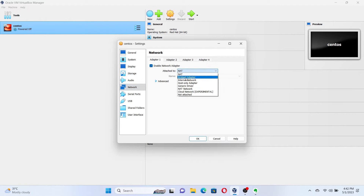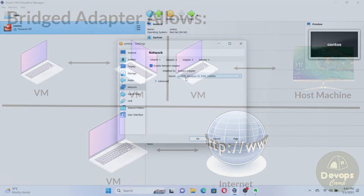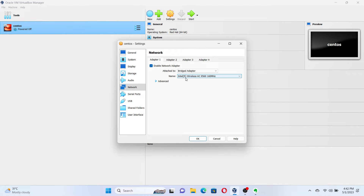With the Bridged Adapter method, we get the ability to connect to the physical machines and virtual machines in the network, as well as the connectivity to the internet from one virtual machine. We will discuss more about the other options in a later video. For now, just select Bridged Adapter and click on OK.